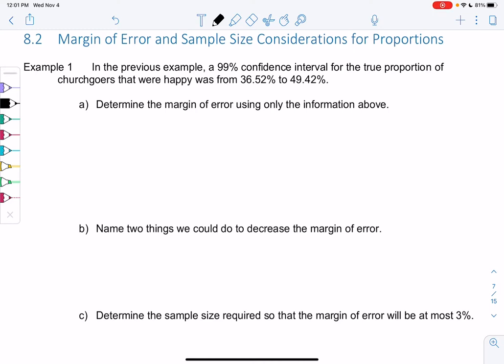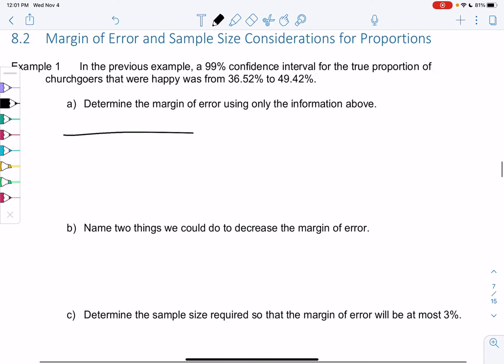Let's pretend someone gave us this information, we didn't do the math, and we were curious to find out the margin of error. If we want to find the margin of error from this information only, I'm going to draw the interval again. I'm going to put 36.52 in decimal form, 0.3652.